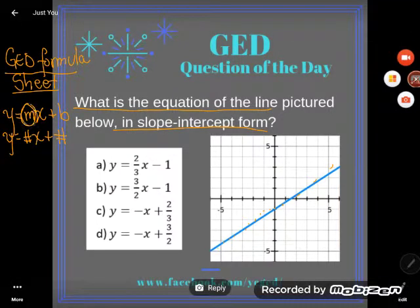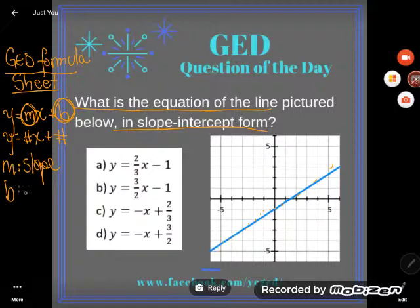So how do you go from this generic formula into a particular line? Well, you just replace the m and the b with values. What values? Well, m is the slope. So look at your graph. Find the slope. That'll be your m. And b is the y-intercept.